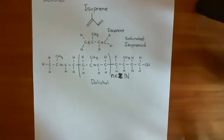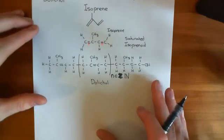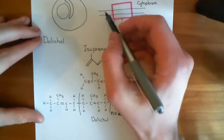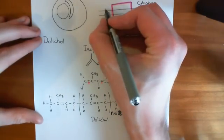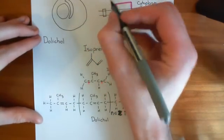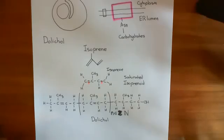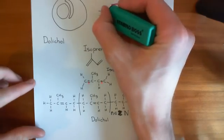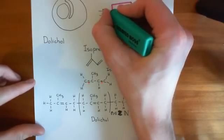So what do these dolicol molecules now do? Well basically, dolicol is a molecule that's going to sit in the ER membrane here. So let's draw it sitting in the ER membrane here. And it's going to be the molecule on which we build our glycosyl group that we're going to add on to our protein.